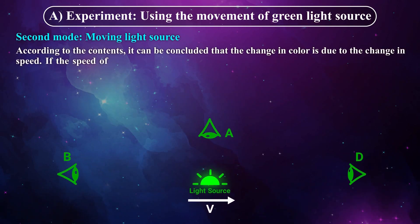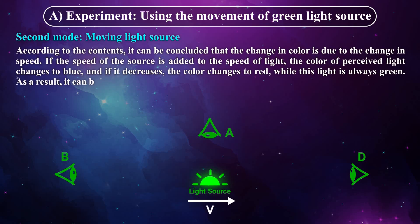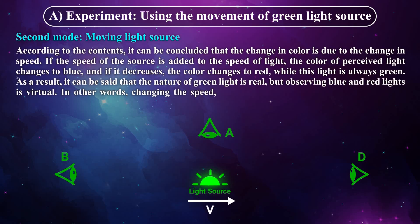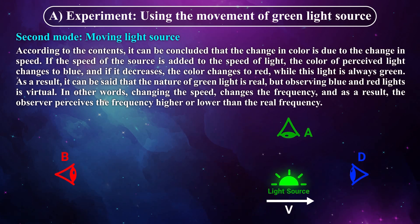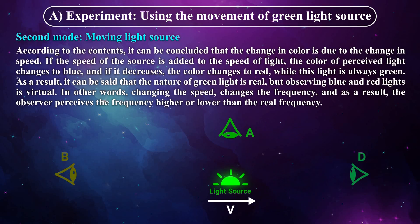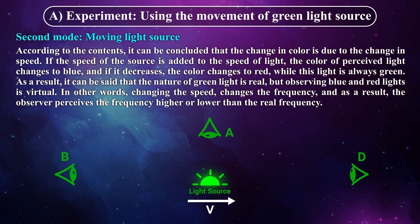According to the contents, it can be concluded that the change in color is due to the change in speed. If the speed of the source is added to the speed of light, the color of perceived light changes to blue. And if it decreases, the color changes to red, while this light is always green. As a result, it can be said that the nature of green light is real, but observing blue and red lights is virtual. In other words, changing the speed changes the frequency, and as a result, the observer perceives the frequency higher or lower than the real frequency.